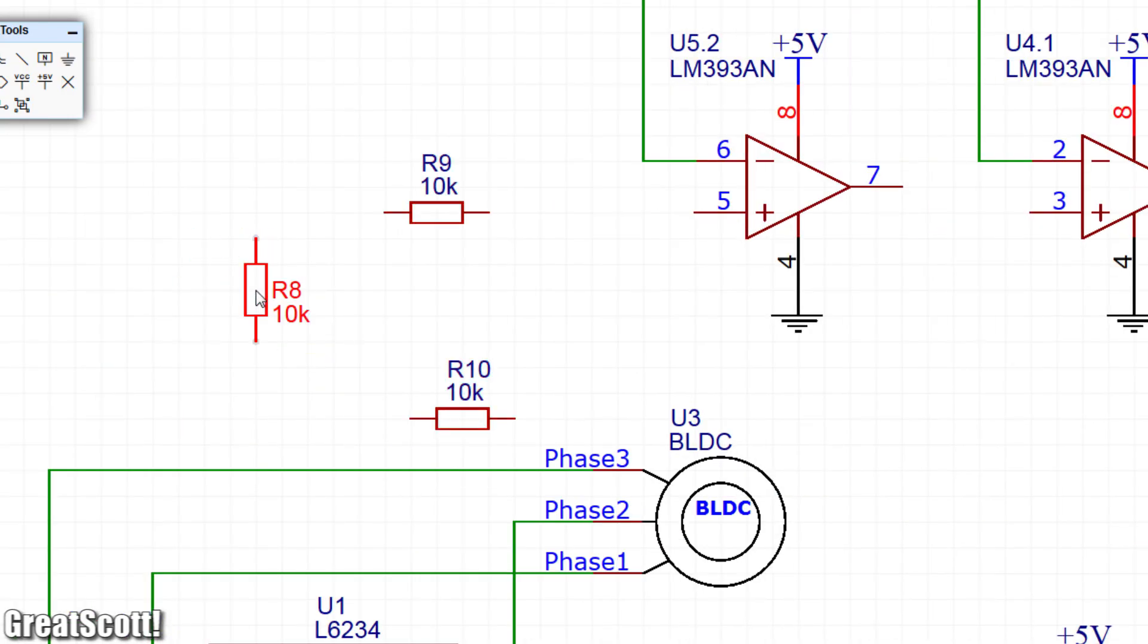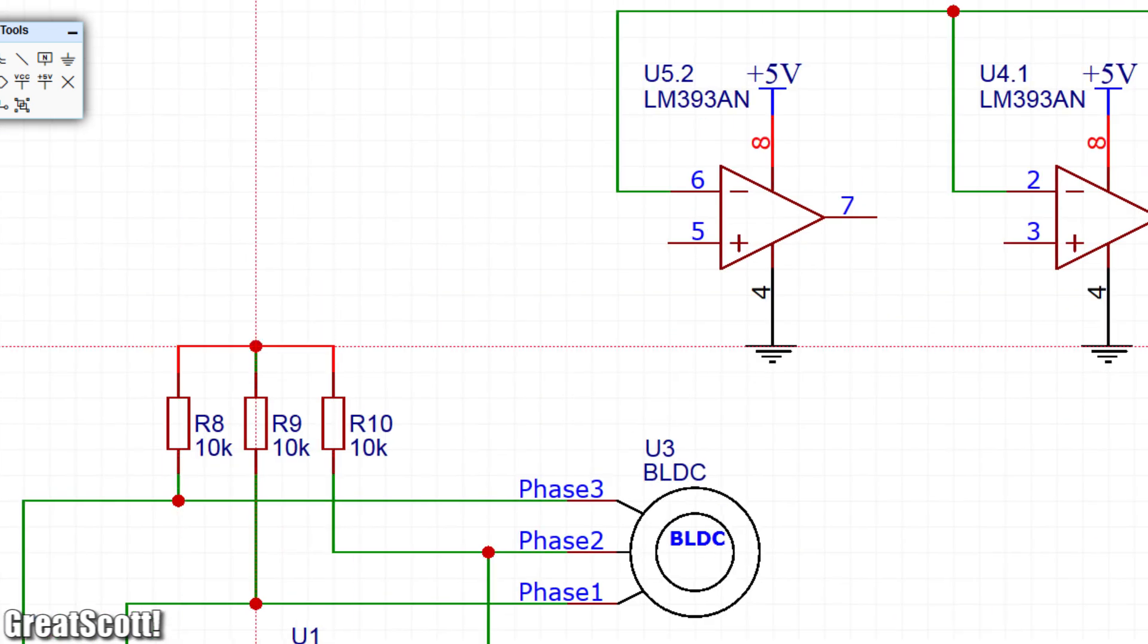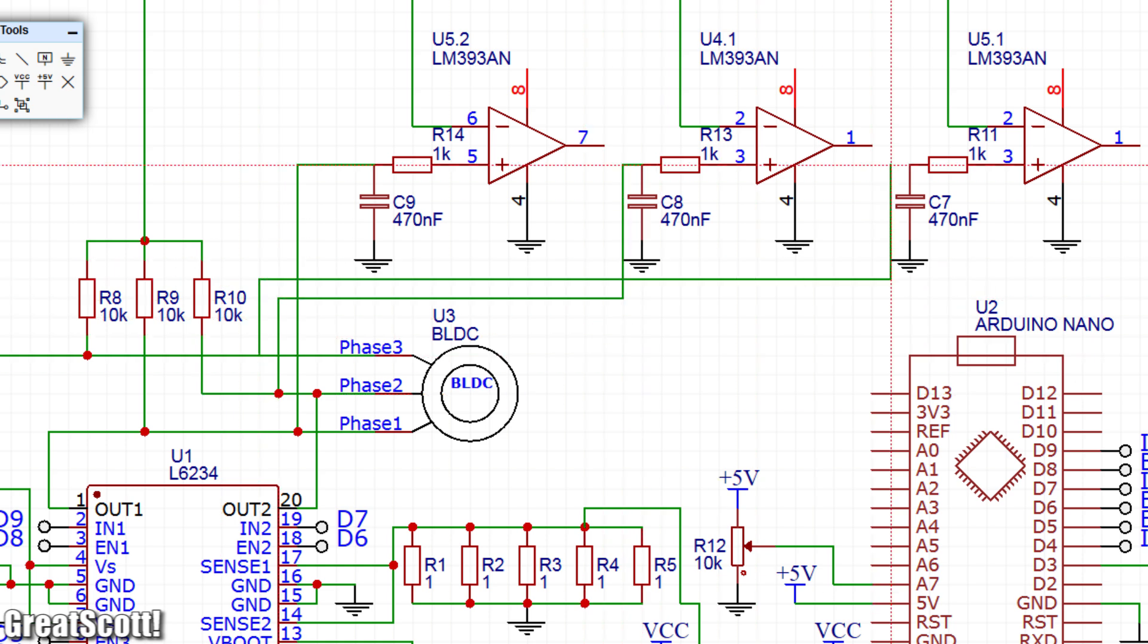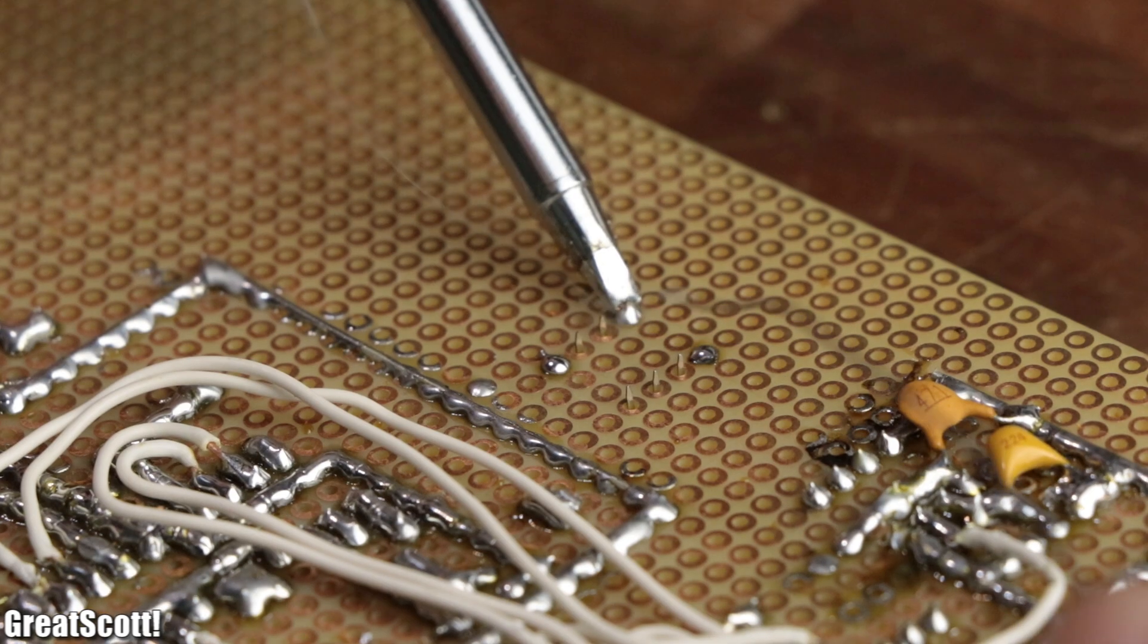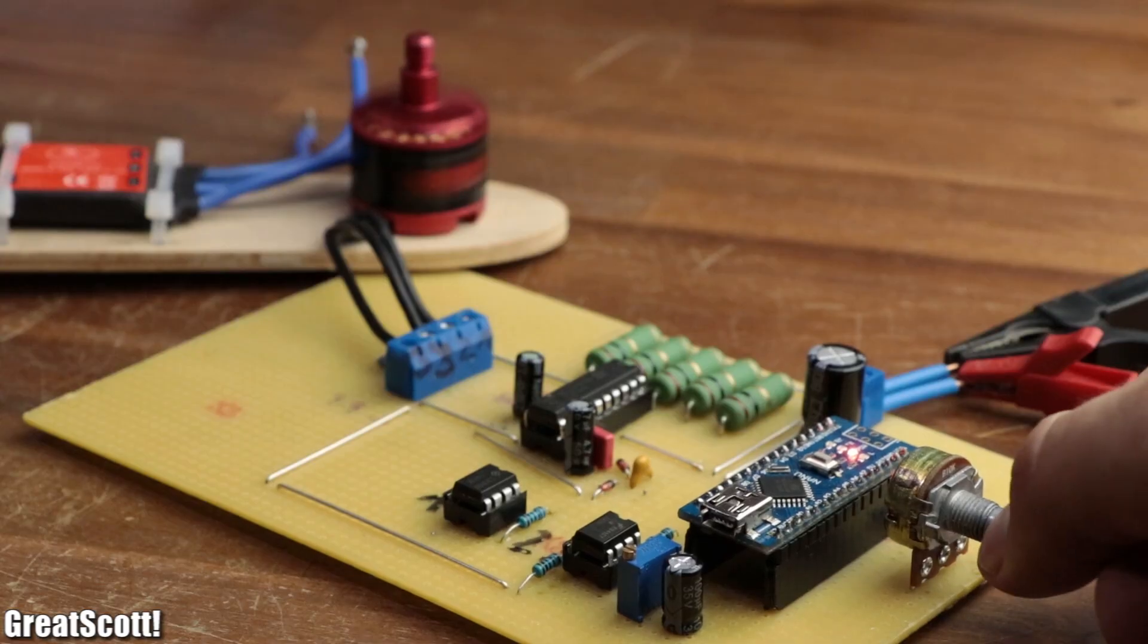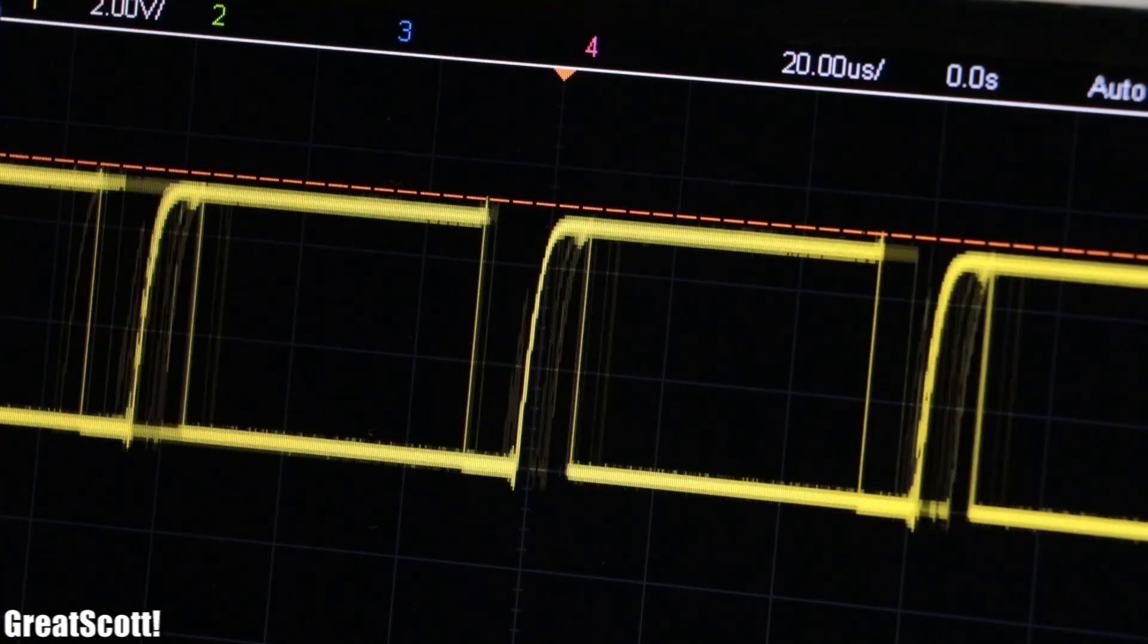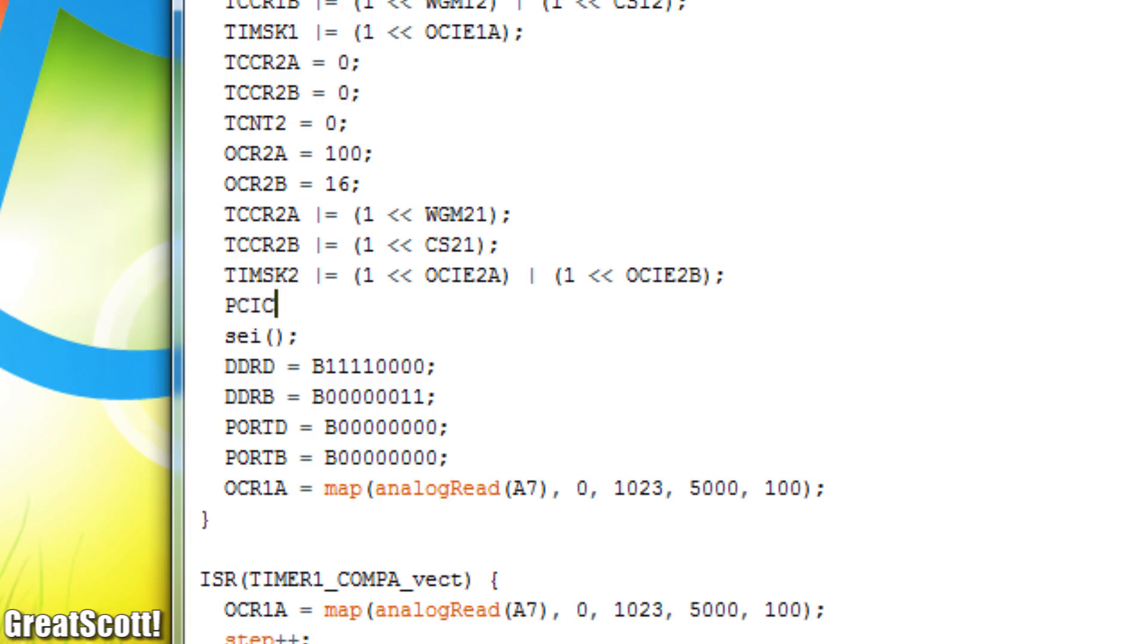That is why I added a second comparator IC. I connected the inverting inputs of the three required comparator stages to the virtual neutral point of the BLDC motor and connected each phase separately to each one of the three non-inverting inputs of the comparators. Their outputs then connect to pins 10, 11, and 12. And after soldering the additional components to the perfboard and connecting them to the rest of the circuit, we can see that by utilizing the code we crafted so far, the three outputs create a PWM signal which changes its output state whenever a zero crossing occurs.